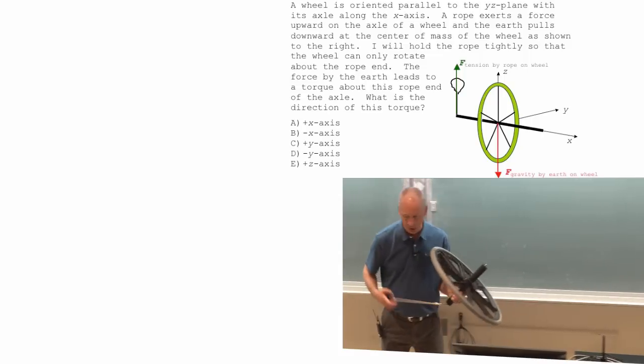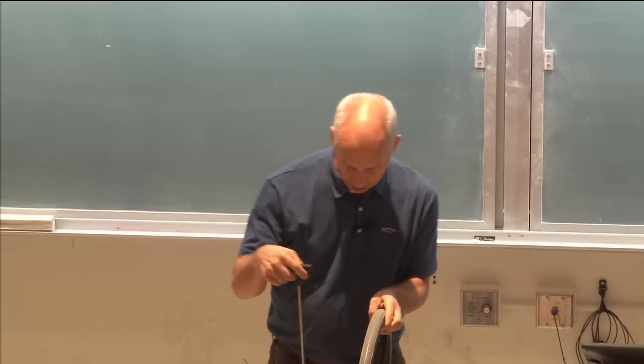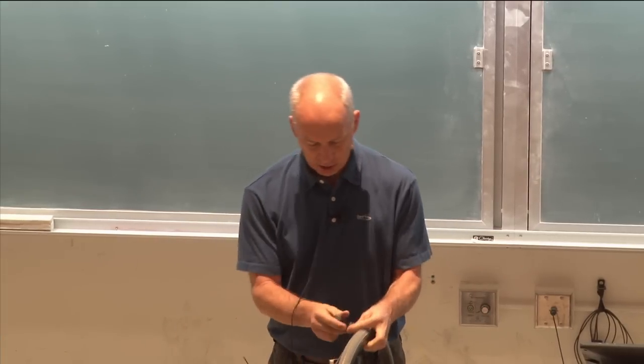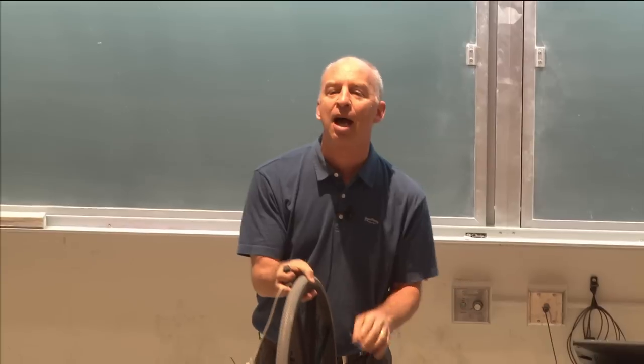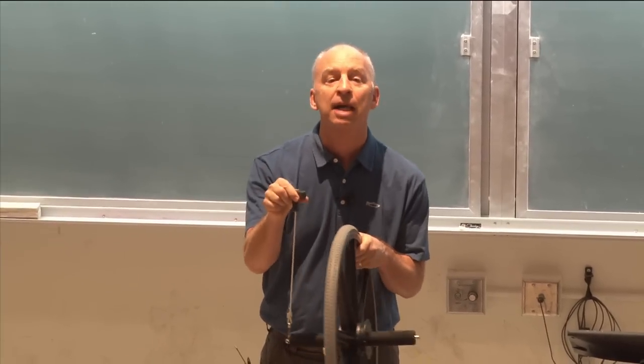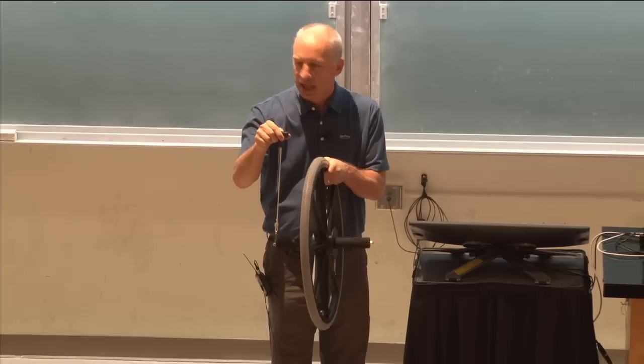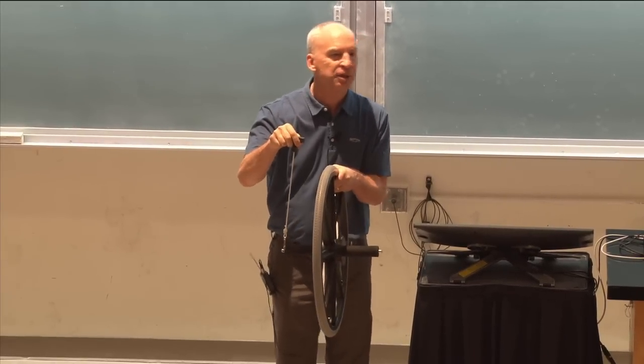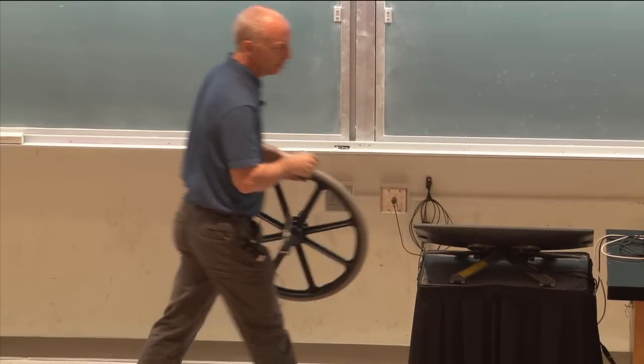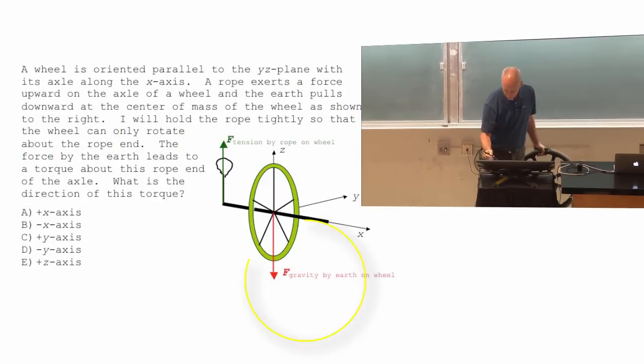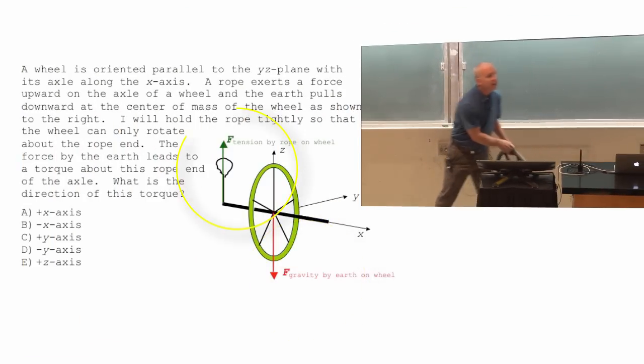So, I have a question for you. At some point, this thing is gonna be rotating and I'm gonna hold it up. But for right now, I just want you to think about interactions. I'm gonna, at some point, I'm gonna pull up on this. And I'm gonna let go with my other hand so that there's only gonna be two forces. The two forces that are shown here. A force downward by the earth and a force upward by the rope.